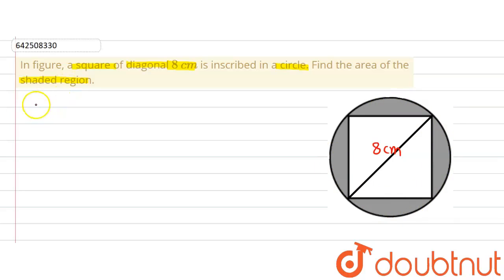Now it can be easily observed from the figure that area of the shaded region will be equal to area of circle minus area of square. If we subtract area of square from area of circle, we will get the area of the shaded region. So now let's find out the area of circle first.